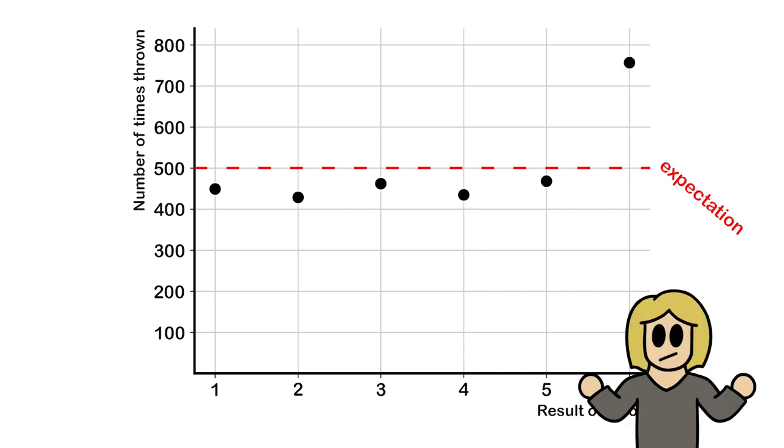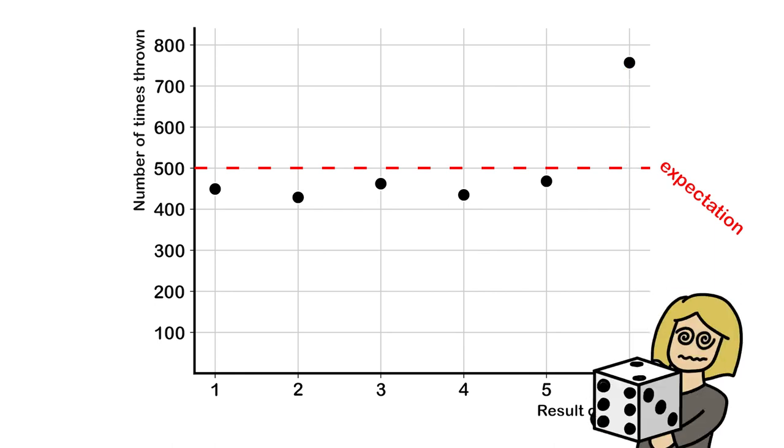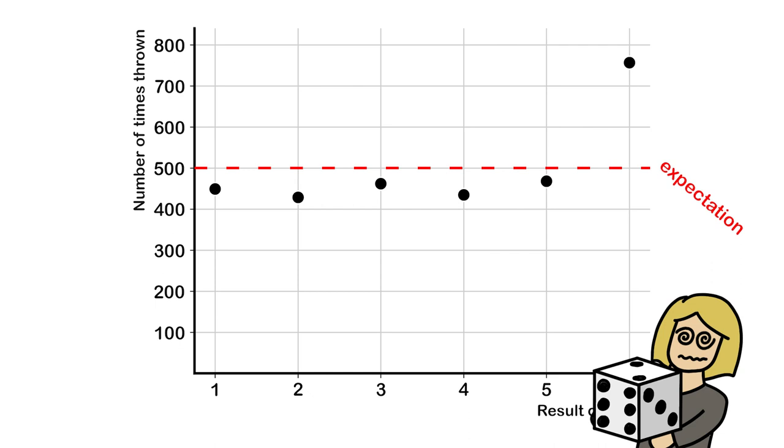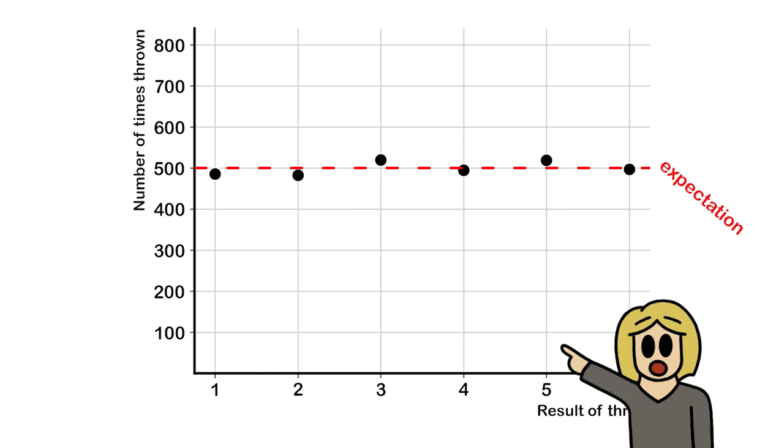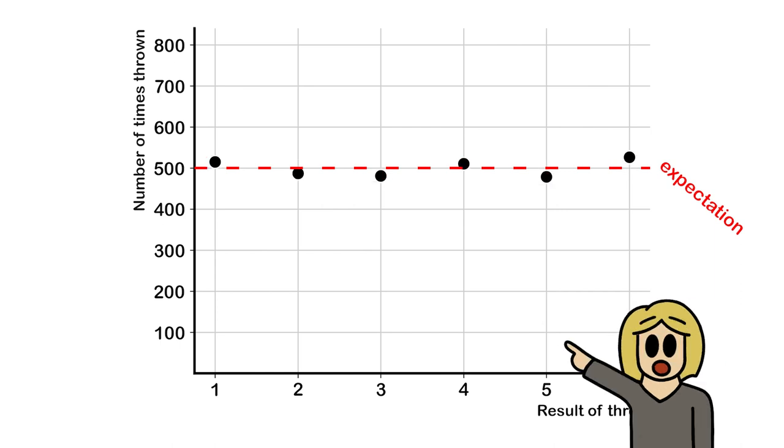Of course, there's a grey area, as there are always random fluctuations. A fair die might give you this result, but also this one, this one, this one, or this one.